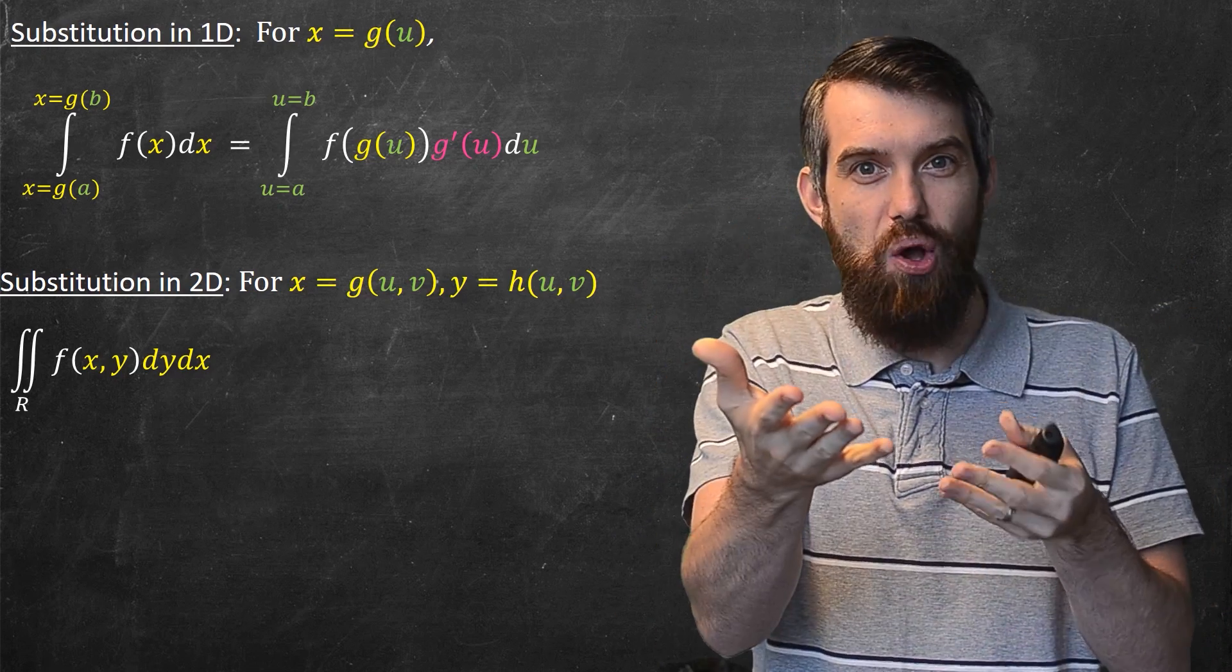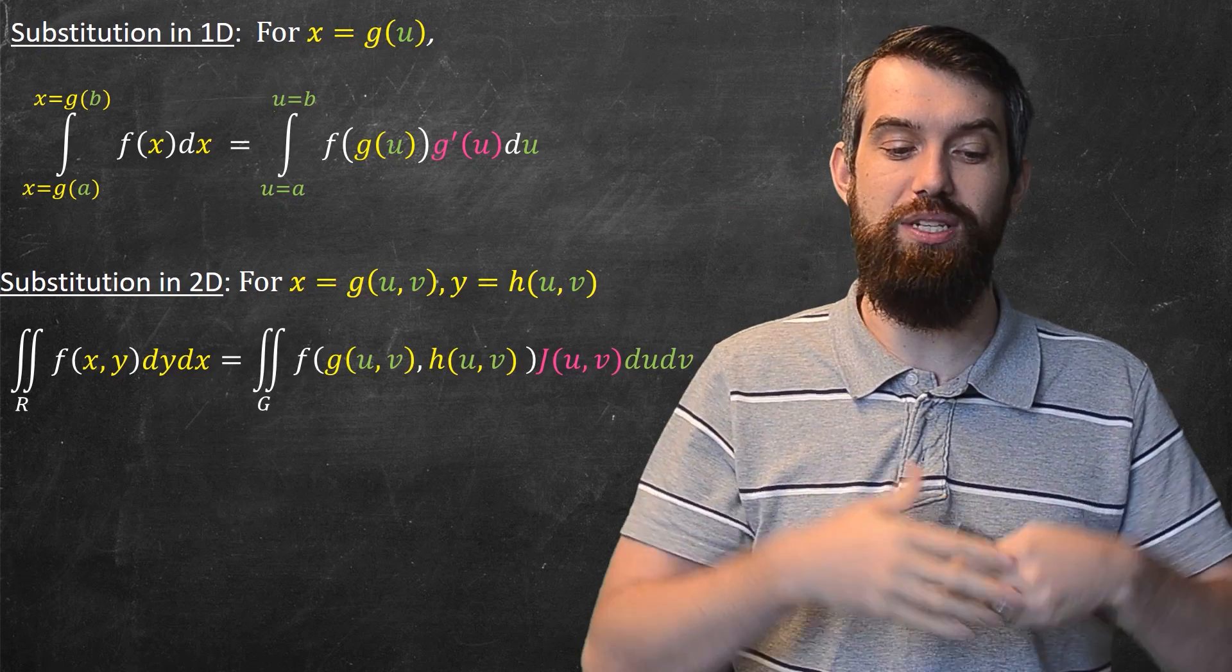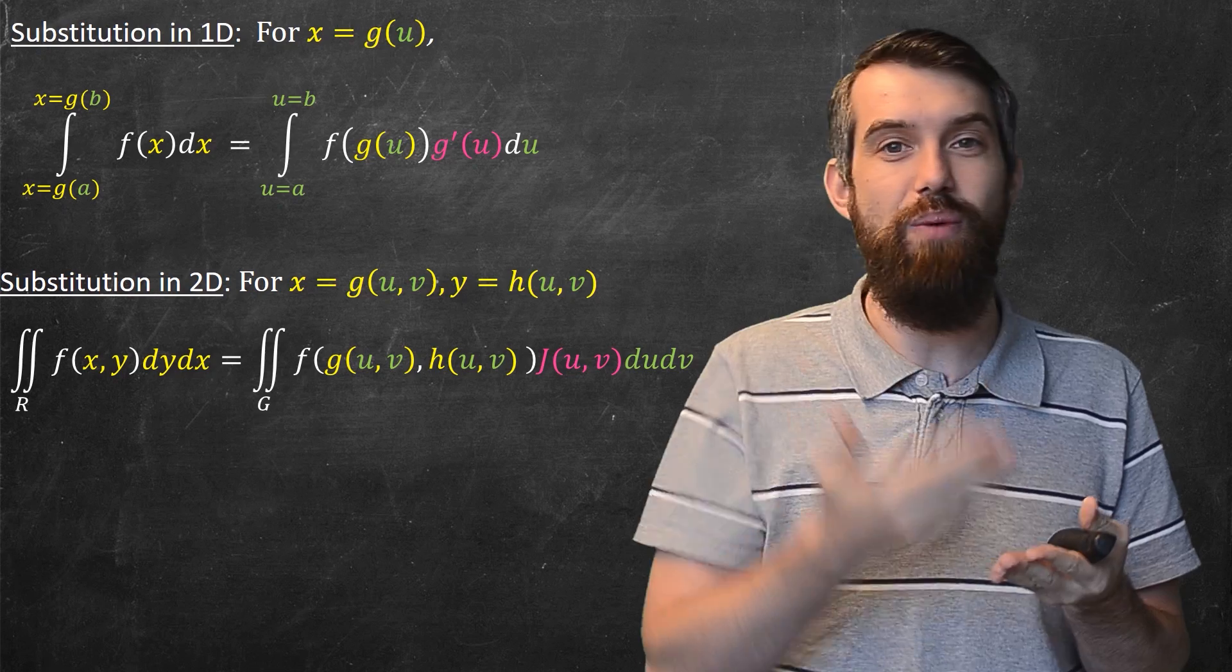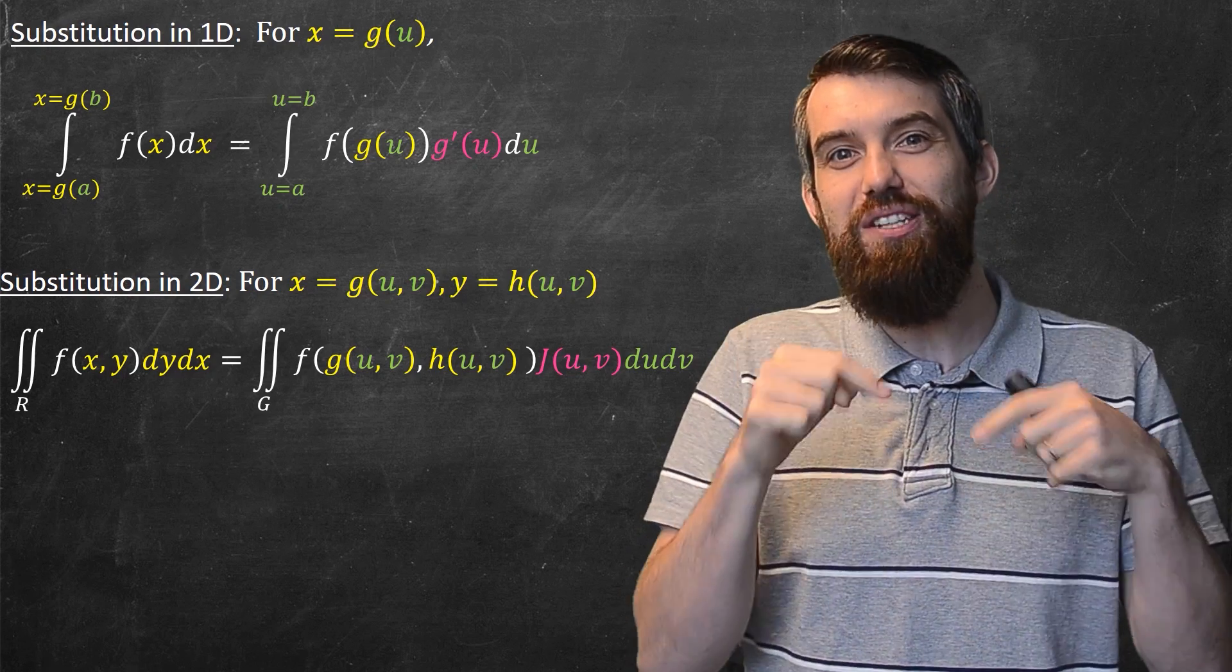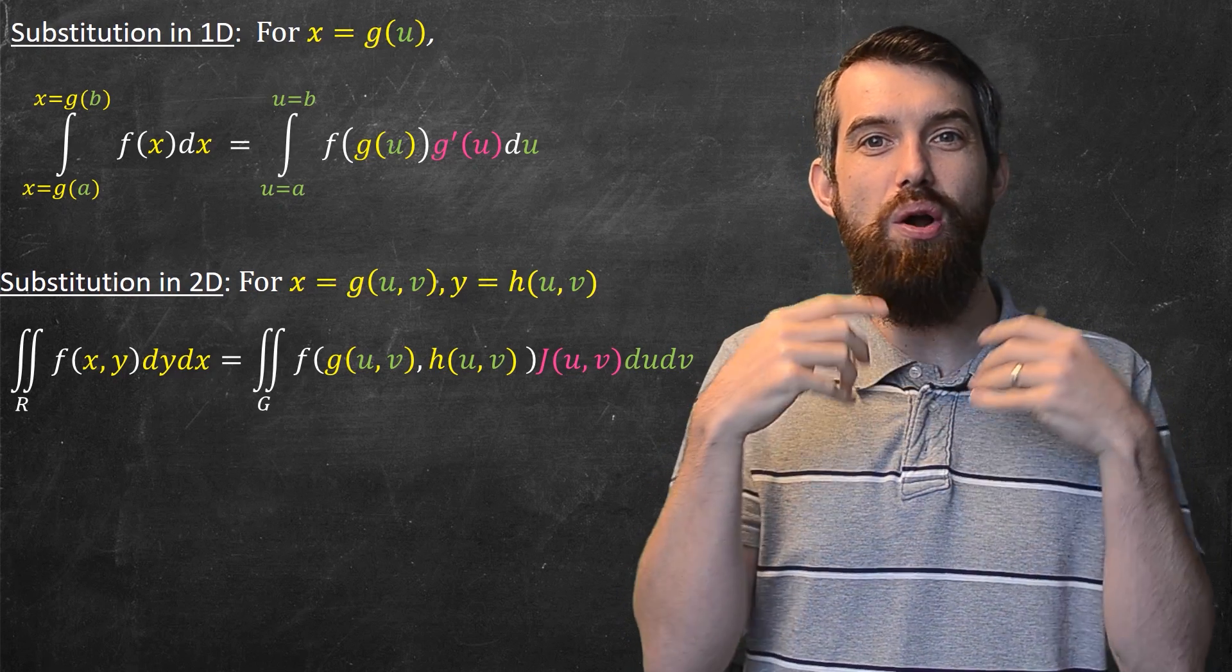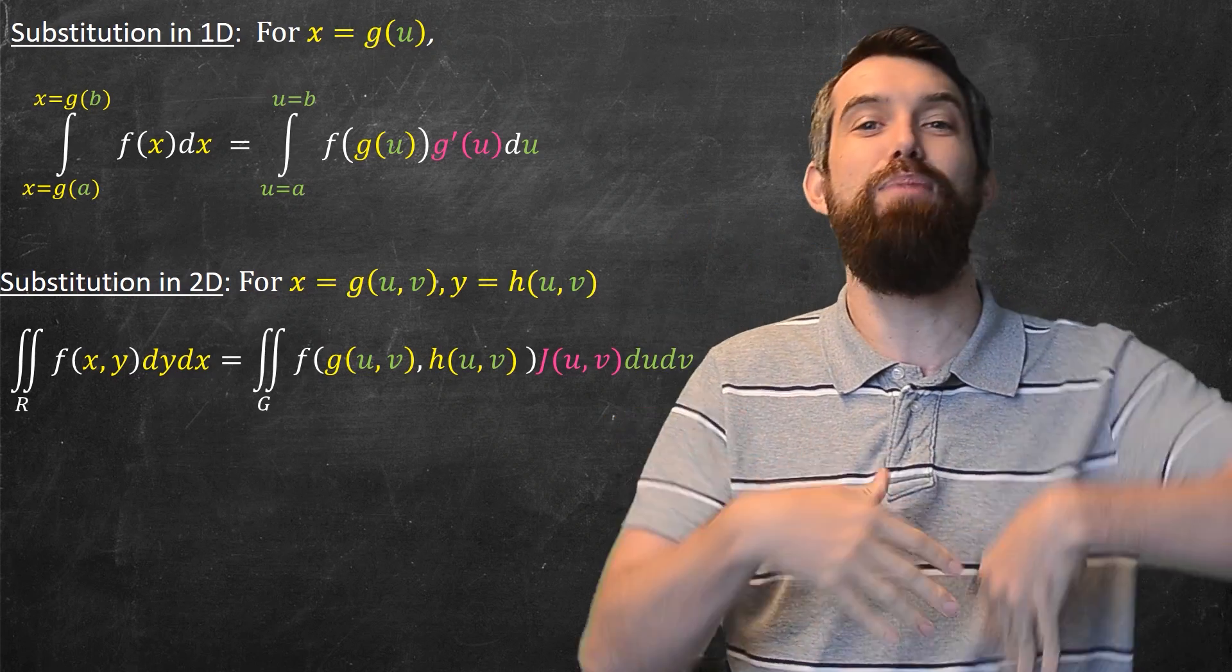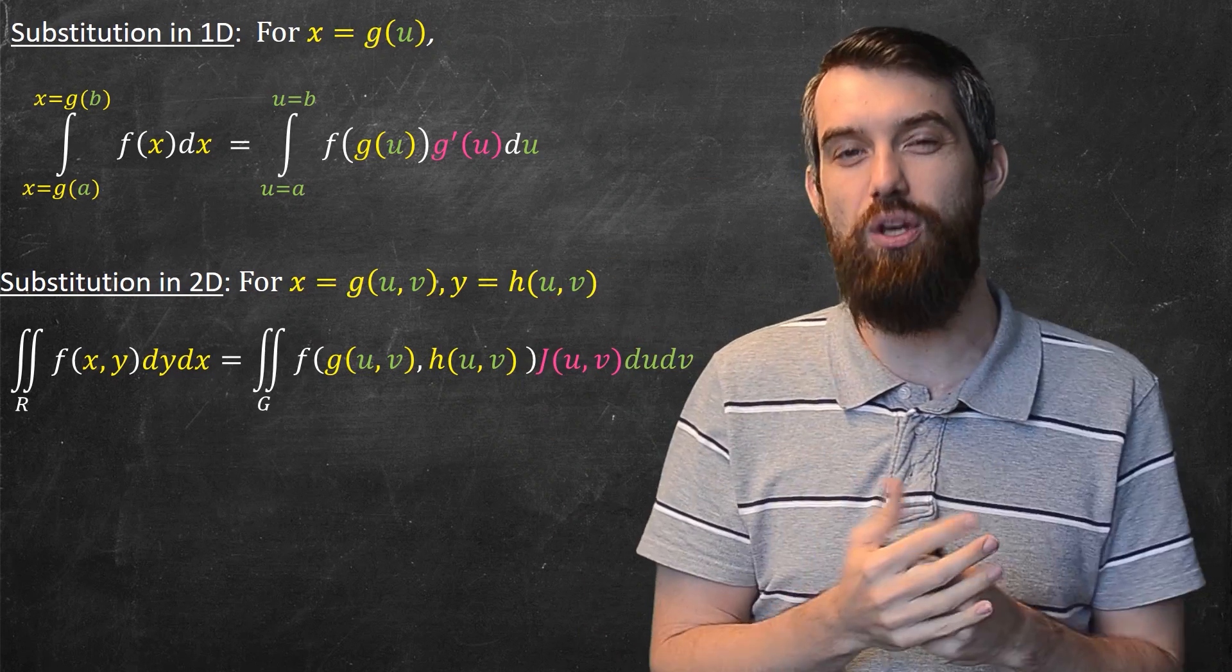Then if I plug this all in, I want to get an integral with respect to u and v. Well, the function evaluates now in terms of u and v. The limits of integration are no longer the region R. Now we call it the region G. It's what happens when you transform under these equations.